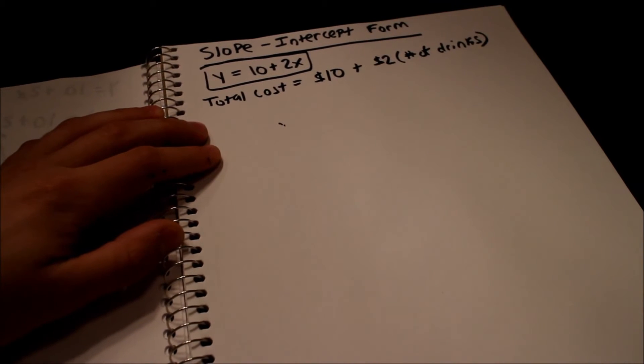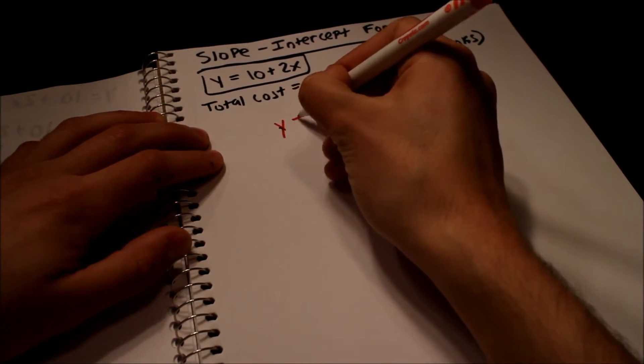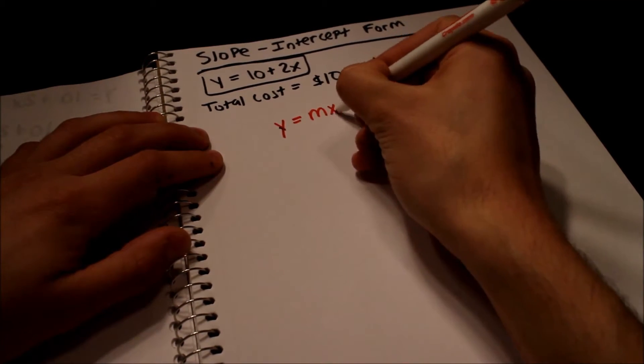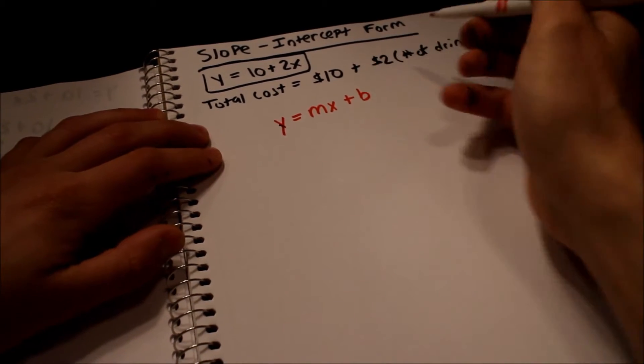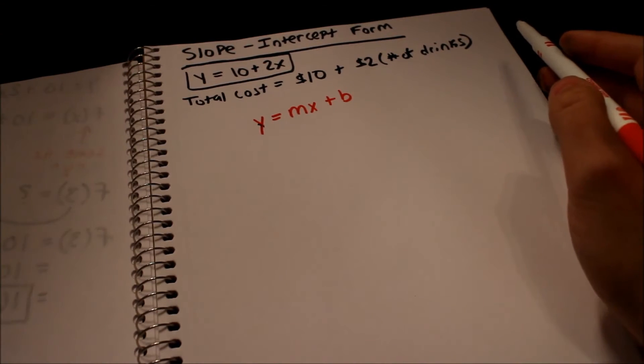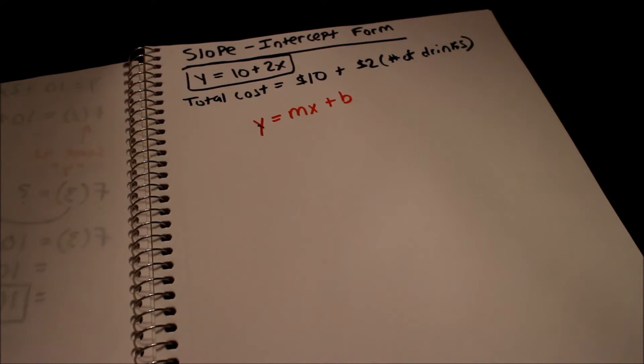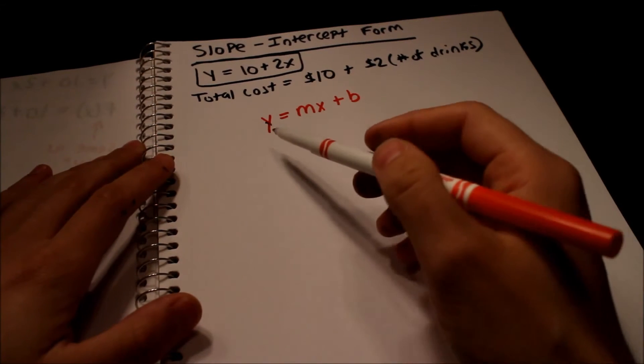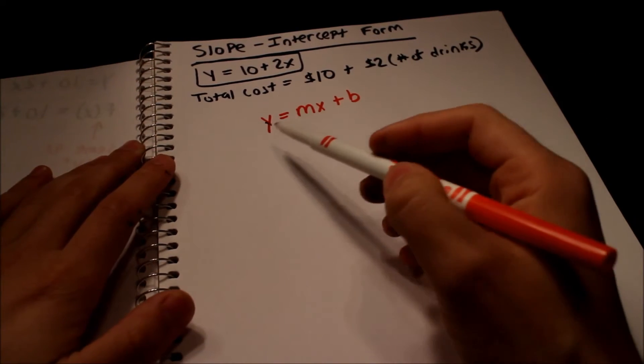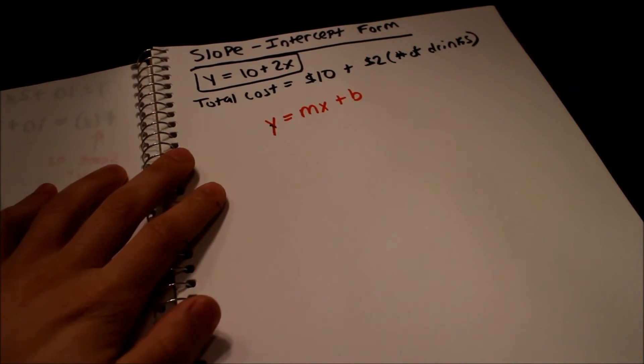So anytime you have an equation that's written like this it's called slope intercept form. You'll see it written as y equals mx plus b. You may have seen this y equals mx plus b. It's just a bunch of letters and the letters I know can probably be pretty scary to some people who are not friendly with math. But it's really not that bad.